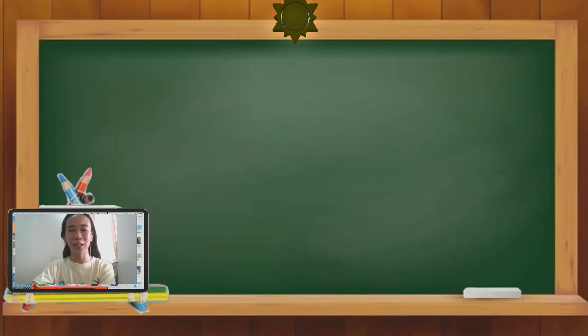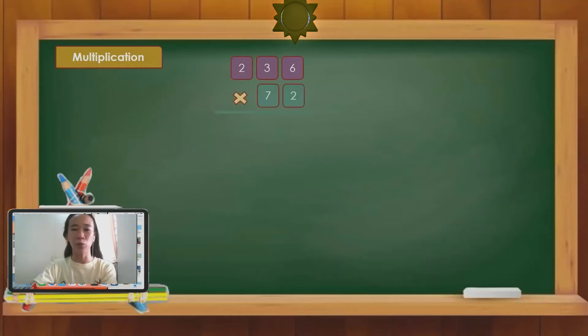Okay, let us have more examples. 236 times 72. First, for the 1's place value. 2 times 6, 12. That is 2. Carry 1. 2 times 3, 6. Plus 1. That is 7. 2 times 2, 4.